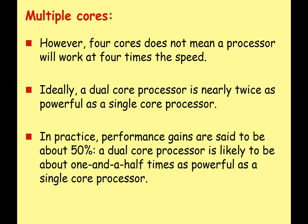However, you have to be careful here. Four cores does not necessarily mean that a processor will work at four times the speed of a single core processor with the same clock frequency. Ideally, a dual core CPU would be twice as powerful as a single core processor. However, this has been studied — I think it's called Amdahl's Law if you want to do some research. In practice, performance gains are likely to be around 50% in this situation — a dual core processor is likely to be about one and a half times as powerful as a single core processor. This is simply because not every job can be parallel processed. There's a limit to how much you can parallel process.